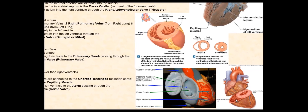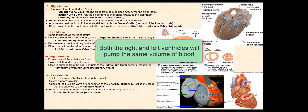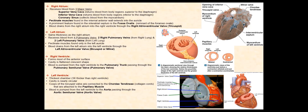One thing to remember: despite the differences in the shape of the cavity of these ventricles, the thickness of the myocardium, and the force and pressure they generate when they contract, both the right and left ventricles will pump the same volume of blood. The amount of blood that leaves the right ventricle and enters the pulmonary trunk is equal to the amount of blood that leaves the left ventricle and enters the aorta. Furthermore, both ventricles will contract simultaneously. We will first have atrial contraction followed by ventricular contraction.